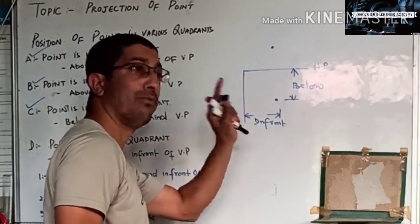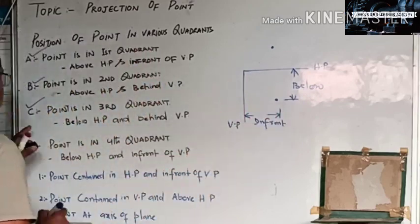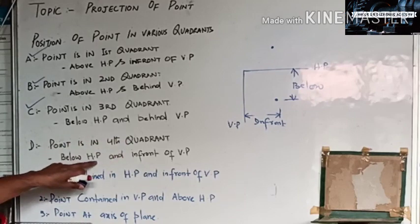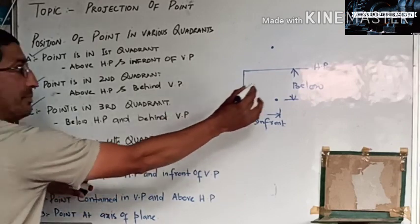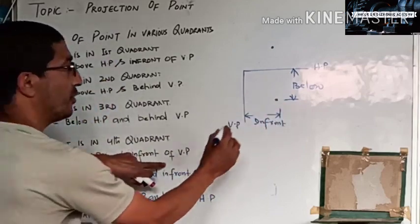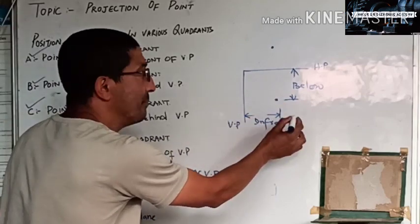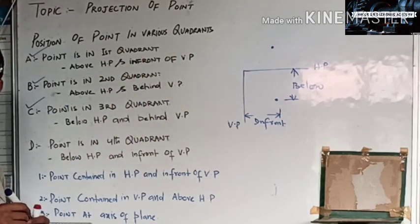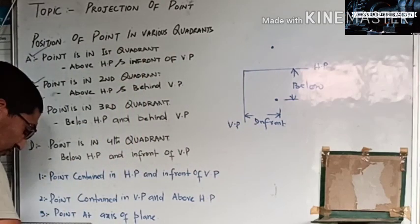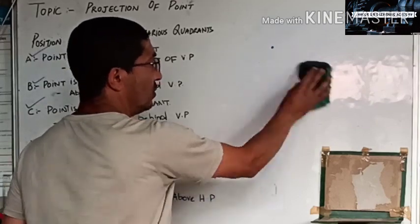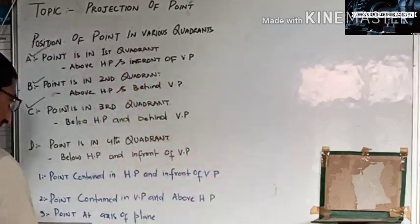This is the fourth quadrant. The point is in the fourth quadrant — below HP and in front of VP. So these are the positions of the point with respect to the various quadrants.